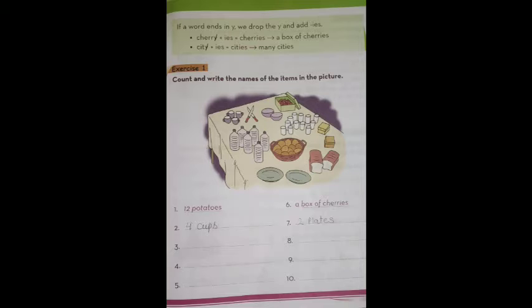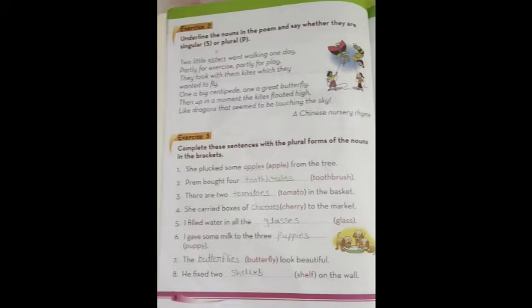Now, we go to page number 8, exercise number 2. Underline the nouns in the poem and say whether they are singular or plural. Like two little sisters. So, what is this? Plural. Went walking one day, partly for exercise, partly for play. They took with them kites. Kites here, what is it? Plural.